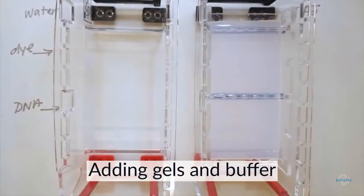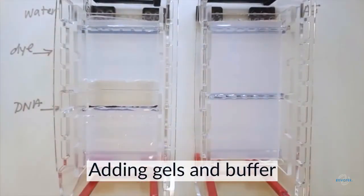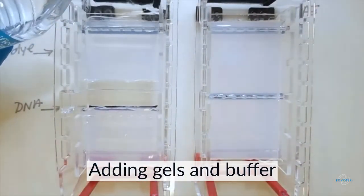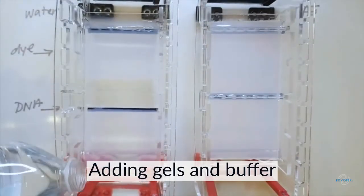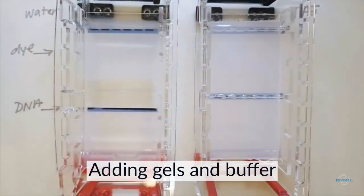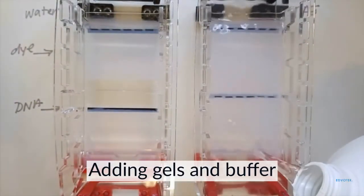I'm going to place the prepared agarose gels into the electrophoresis chambers. Now these agarose gels were prepared using electrophoresis buffer. I'm going to pour water, just regular bottled water, over the gels on the left hand side. And then on the right side, I'm going to add our prepared electrophoresis buffer.